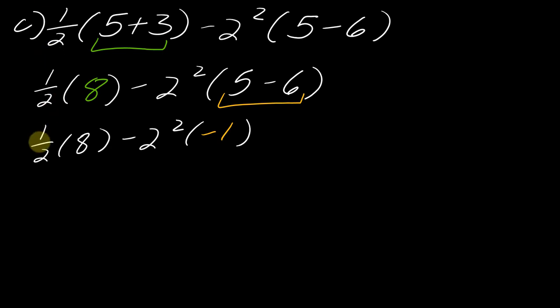So now looking at this, the next thing we have to do is the exponent, so that would be this part right here. So notice I'm not even thinking about the fraction at the moment, I'm just kind of following along with that order of operations. So this is negative 4 times negative 1. So now I've got to deal with the multiplication. So 1 half times 8, what is half of 8? Half of 8 is just 4. So this is 4 minus 4 times negative 1.